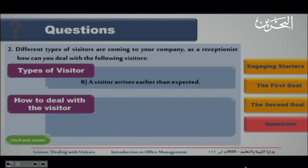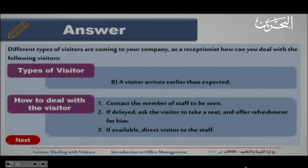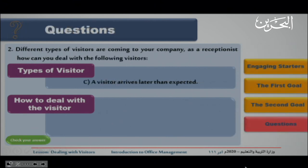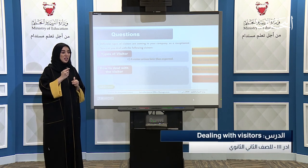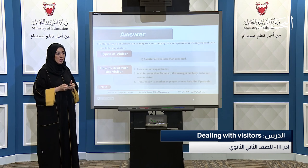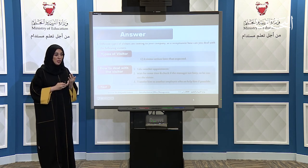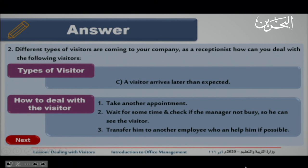Visitor B — a visitor who arrives earlier than expected. Visitor C — a visitor who arrives later than expected, after their appointment time: take another appointment, or wait and check if the manager is free to see the visitor, or transfer the visitor to another employee who can help and see them, if possible.